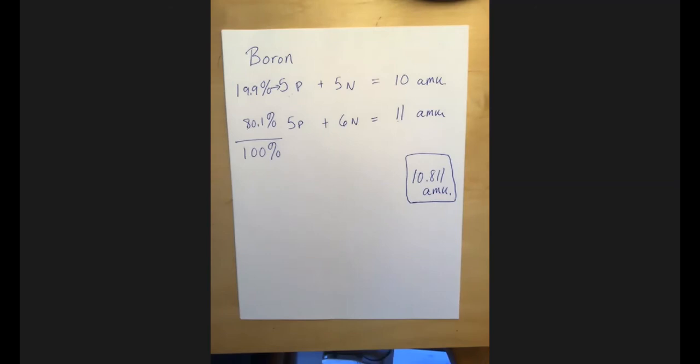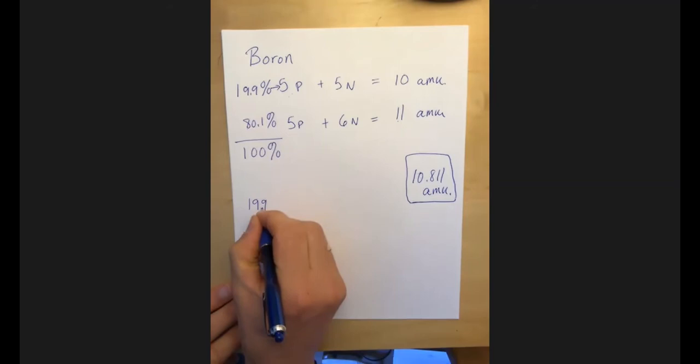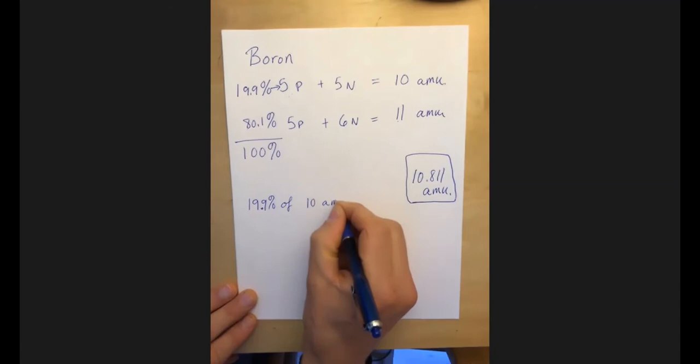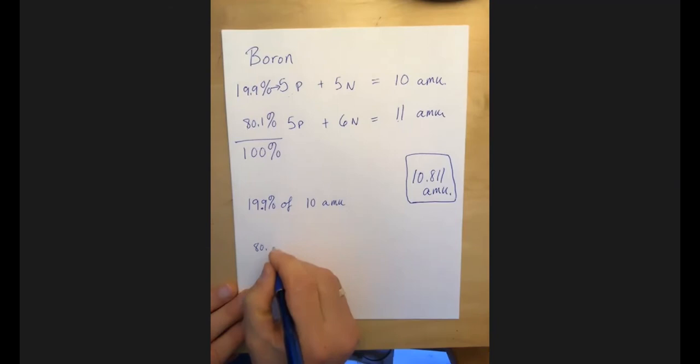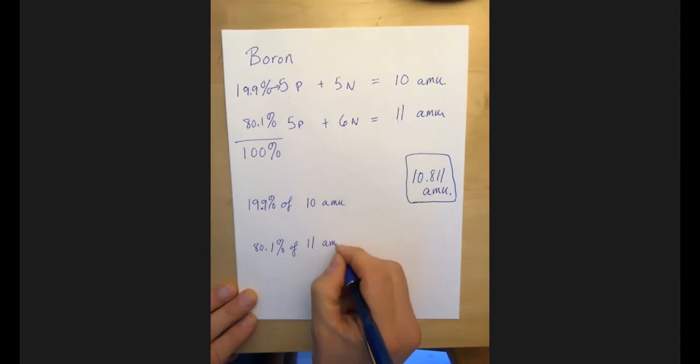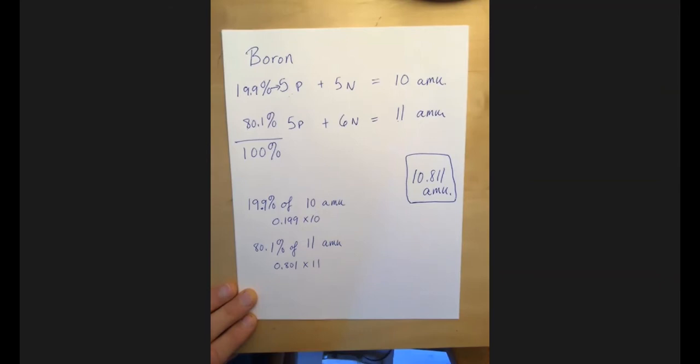So I'm going to take 19.9% of 10 AMU. And I'm going to take 80.1% of 11 AMU. And if I do that, I go 0.199 times 10. And I go 0.801 times 11.